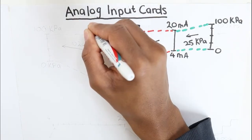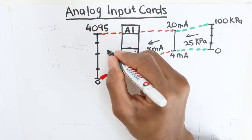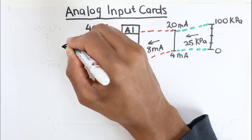The analog input card will read this current signal and convert it to a value that is between 0 to 4095.